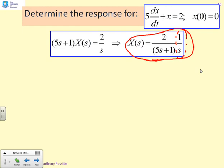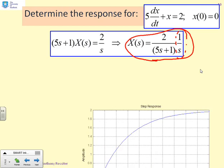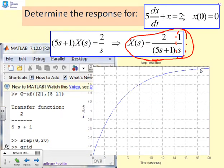And I can solve for this by creating the left-hand part of the transform. So there it is. g equals tf 2 comma 5 1. And you'll see that gives me 2 over 5s plus 1. So I've just created a transfer function representation for the left-hand bit of x(s).